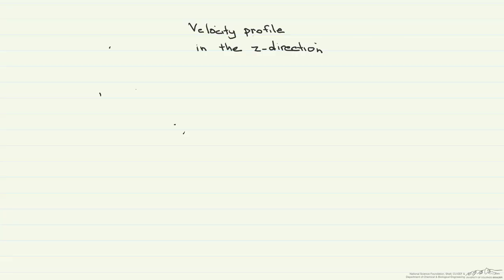Here we're going to consider steady state, one-dimensional flow in the z-direction over a single stationary vertical plate, exposed to atmospheric pressure. And what we want to know, given this coordinate system, is what is the velocity profile W of x for this type of flow.